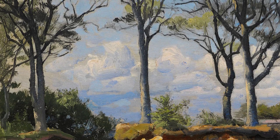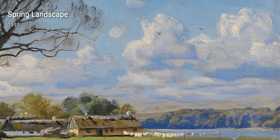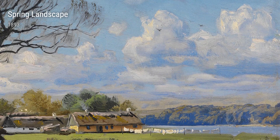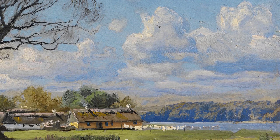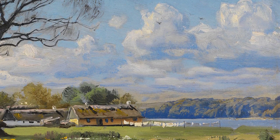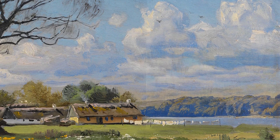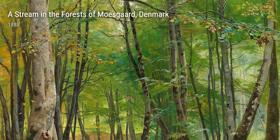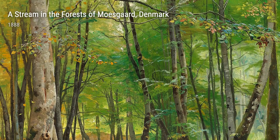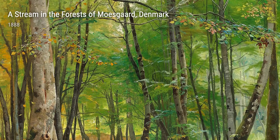Lastly, we have Coastal Scenery and King George I of Greece, both painted in 1892. These paintings demonstrate Mønstad's versatility as an artist, as he effortlessly transitions from the picturesque coast to a regal portrait. Both pieces showcase his mastery of capturing the intricacies of his subjects and the surrounding environment.